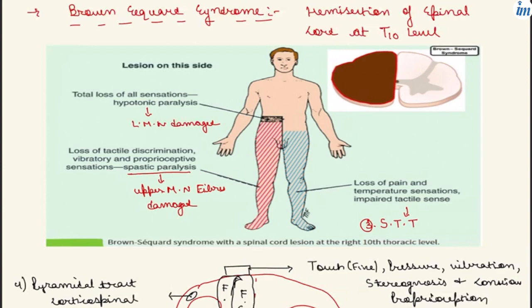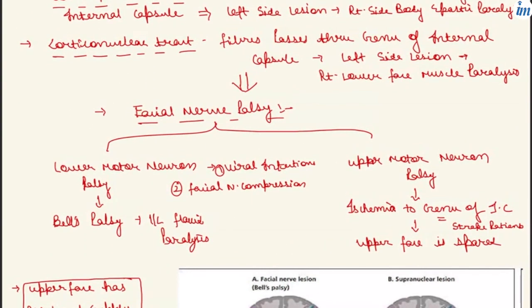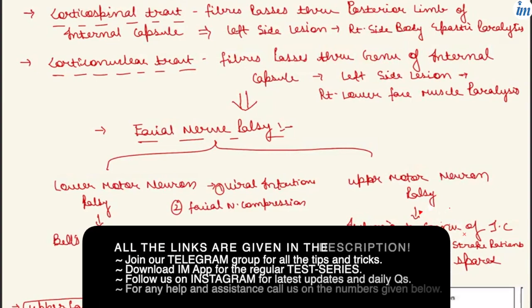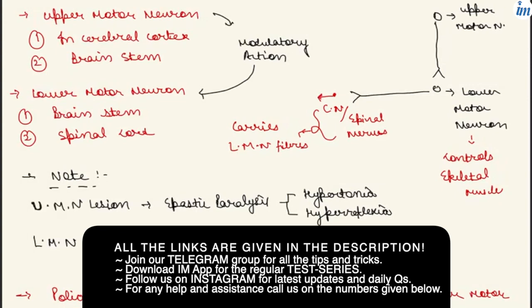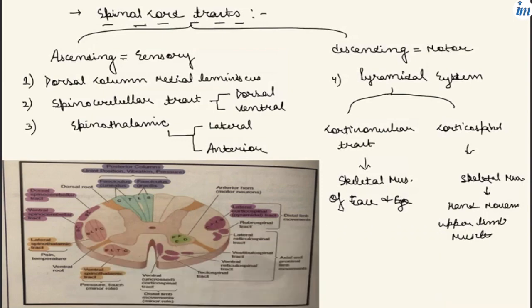This covers the concept of upper motor neuron and lower motor neuron lesions, facial palsy, and the pyramidal system. To understand this video properly, watch our video on spinal cord tracts on the Inspiring Minds YouTube channel. If you have any doubts, you can download the Telegram app and ask in the Inspiring Minds study partners group. Thank you.